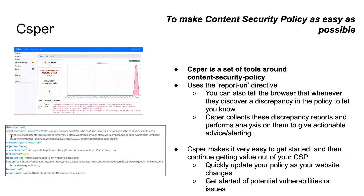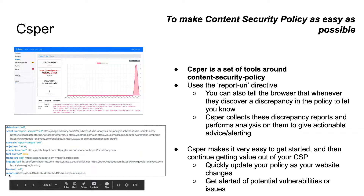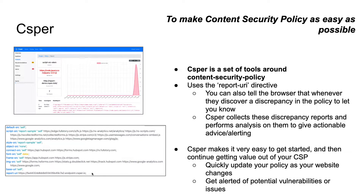You can see an example report URI here. This is a full content security policy. We can say default source allows resources from self, script source from these different origins, styles, and here's the report URI — which says: if you ever notice a violation of this policy on a web page, let me know here. The browser will send a JSON body to that endpoint with a bunch of different information. Using this information, Casper collects, aggregates, and analyzes thousands to potentially millions of reports and provides actionable insight that you, the website owner, can use to make your website more secure. And if something does break, to quickly fix it and be notified of the issues.